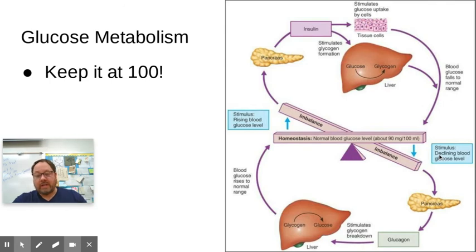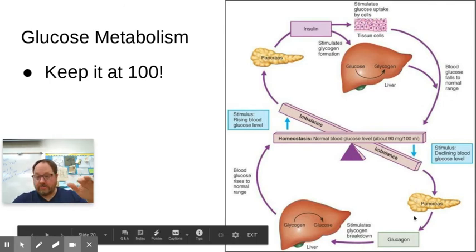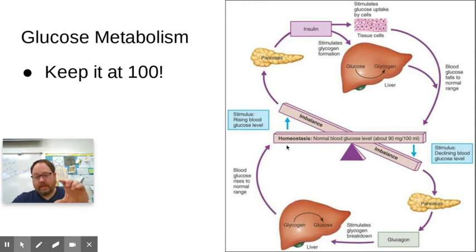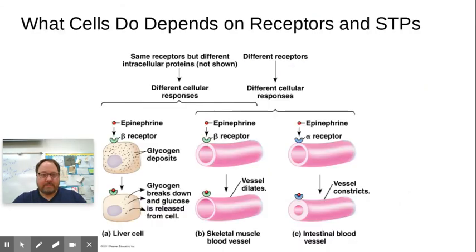If you've gone a long time without eating or have been exercising, blood sugar drops below 100. The pancreas releases glucagon, which causes glycogen to be hydrolyzed and glucose to be released back into the bloodstream, bringing blood sugar back up to 100. Insulin and glucagon are antagonistic hormones that keep you right at homeostasis.